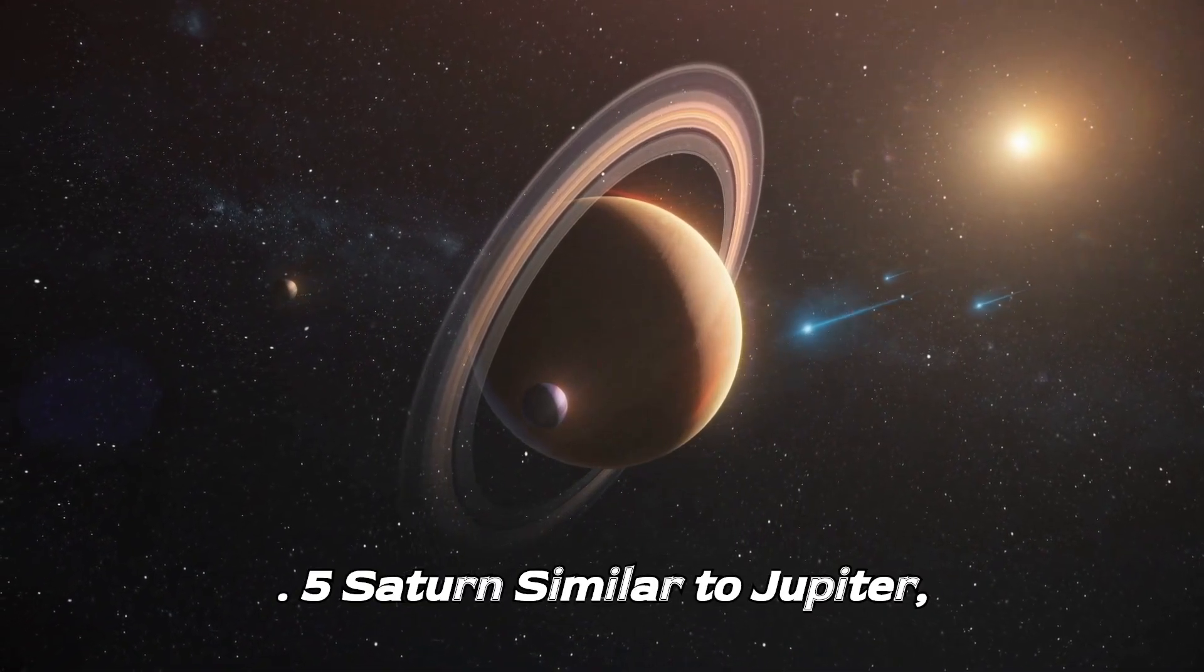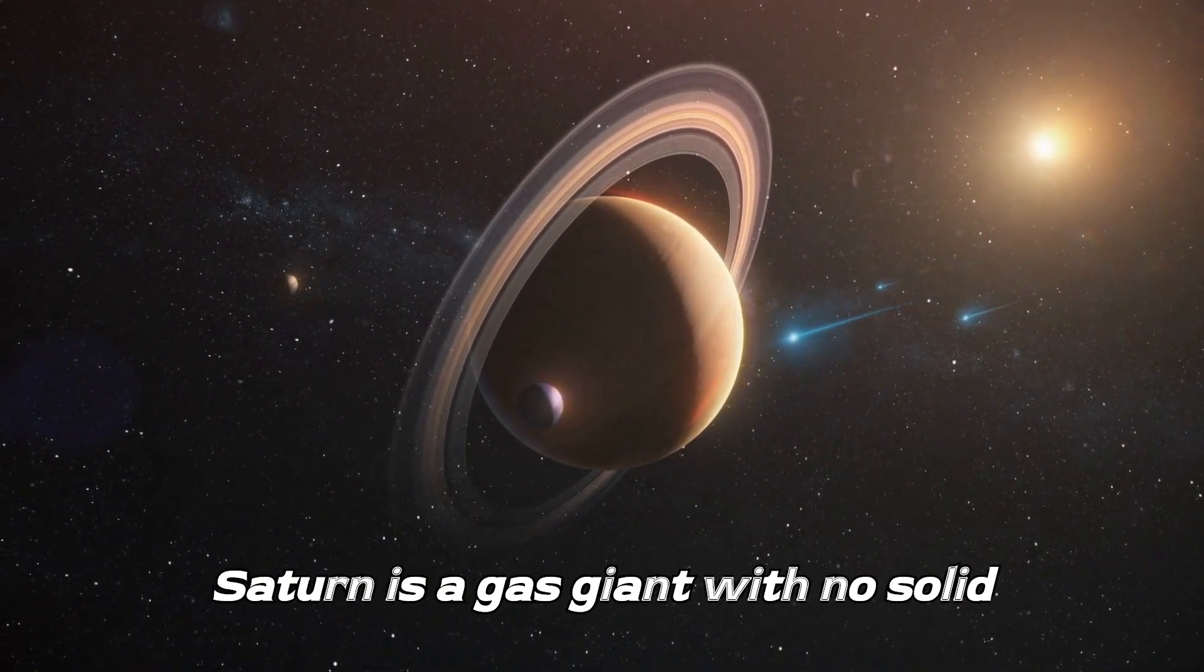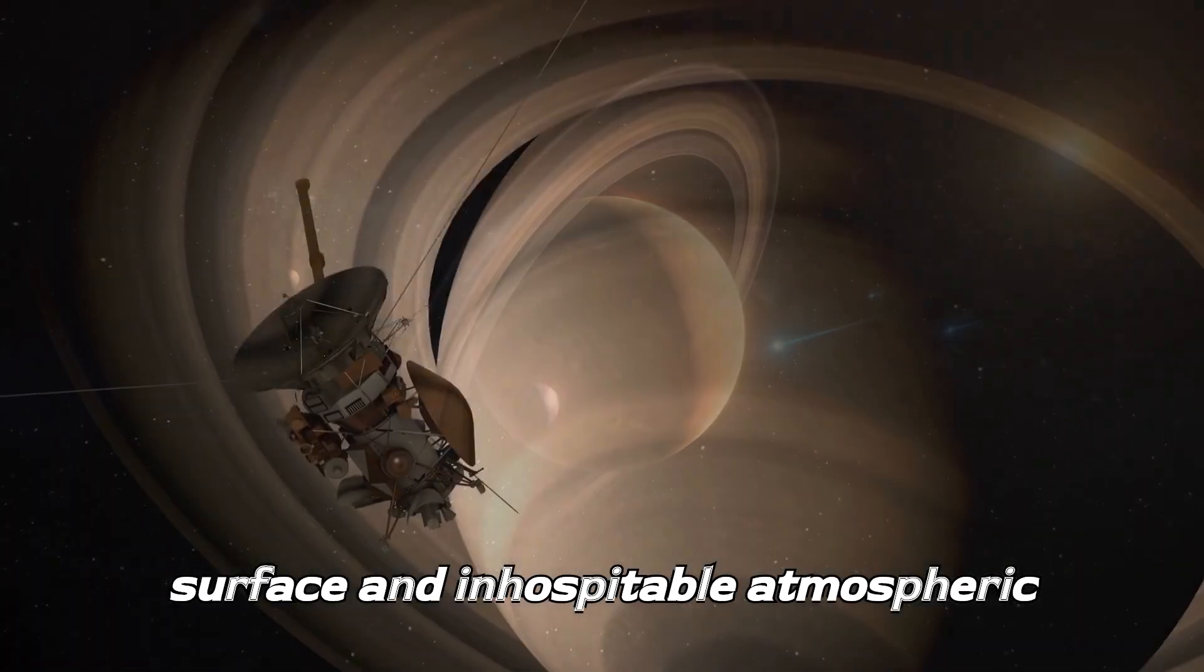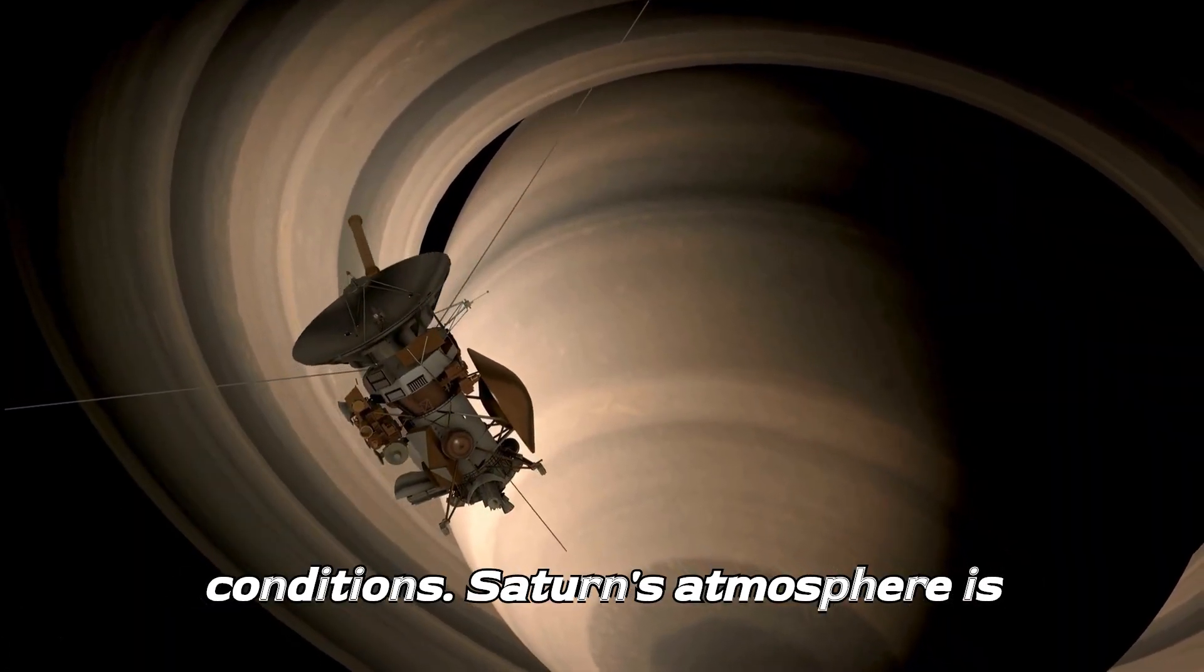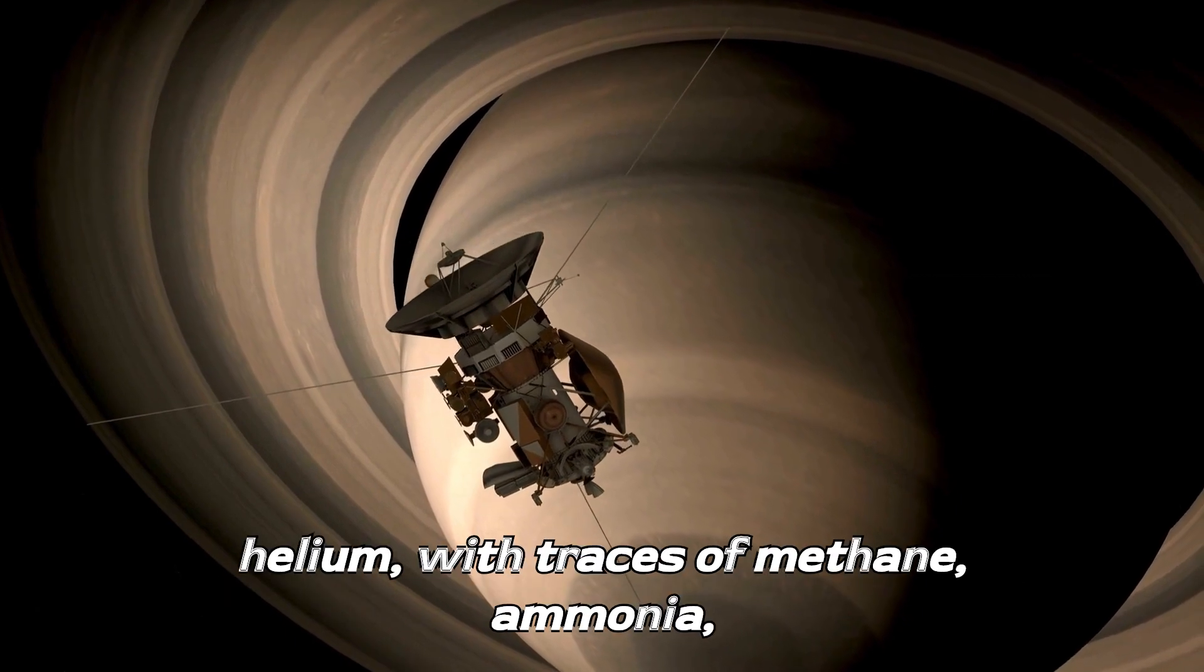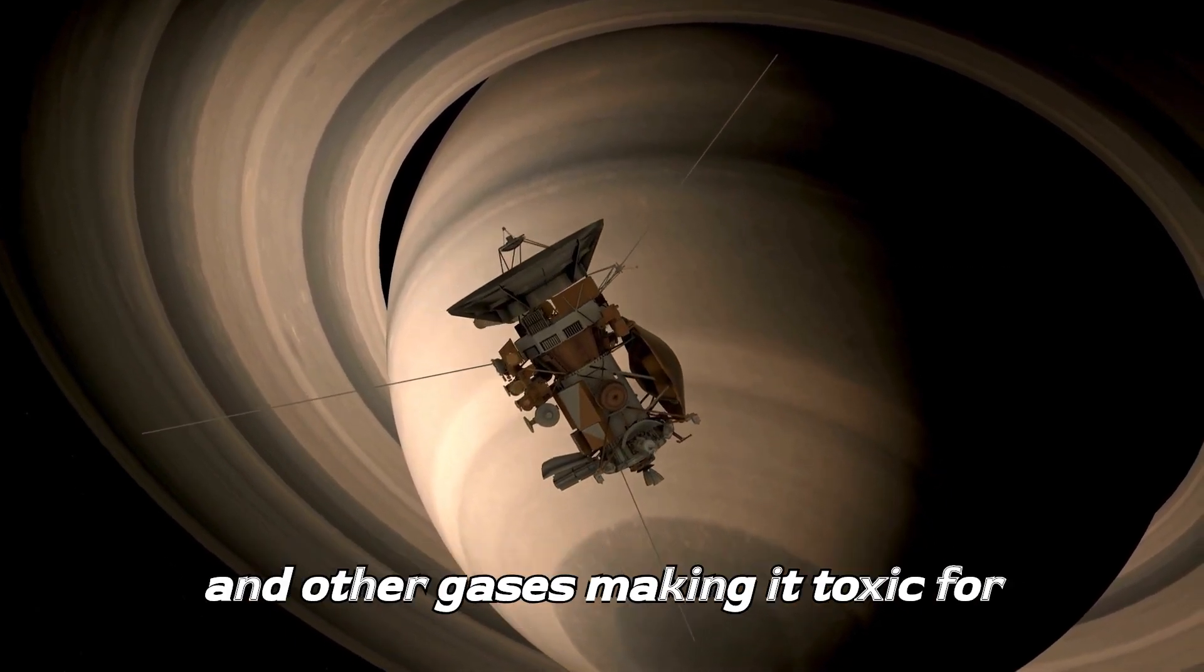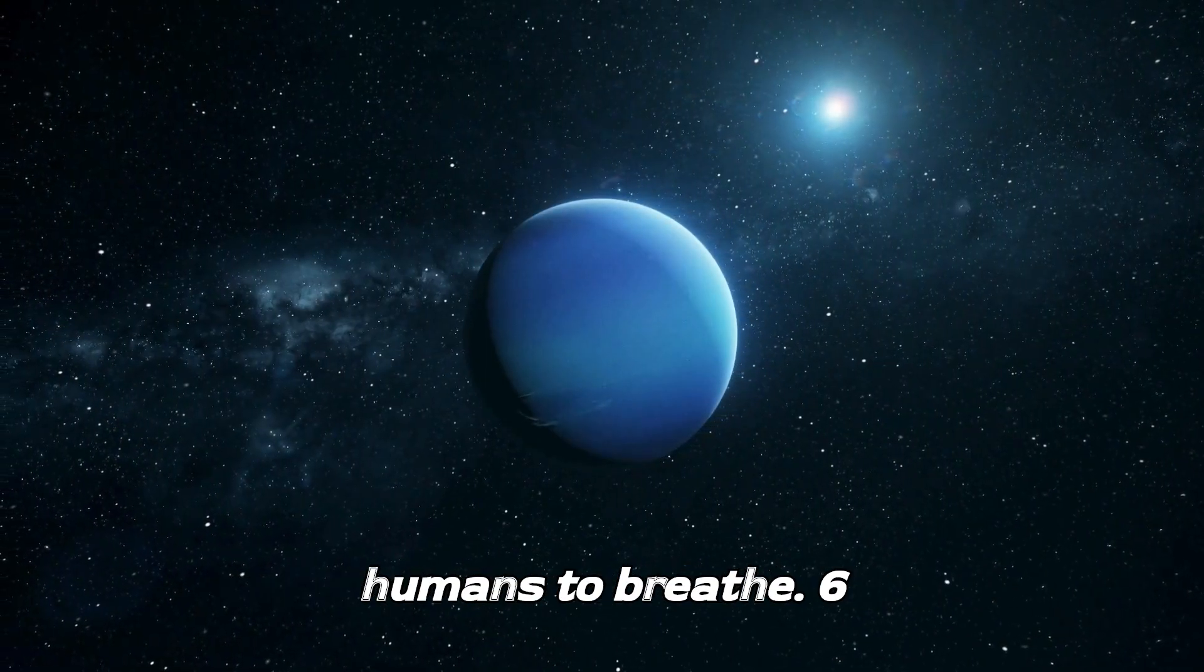5. Saturn. Similar to Jupiter, Saturn is a gas giant with no solid surface and inhospitable atmospheric conditions. Saturn's atmosphere is primarily composed of hydrogen and helium, with traces of methane, ammonia, and other gases, making it toxic for humans to breathe.